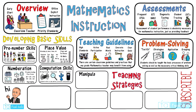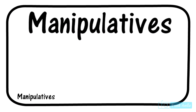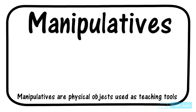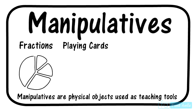The next domain is teaching strategies. Manipulatives are physical objects that are brought into the classroom and used as teaching tools. Manipulatives are quite effective, in particular when teaching fractions — they are great for visual representation and younger students love working with their hands. For fractions, there are fraction rods and pie charts. Playing cards are great for manipulatives and can be used not just for probability but for many other activities.